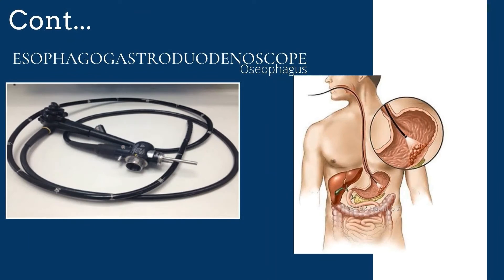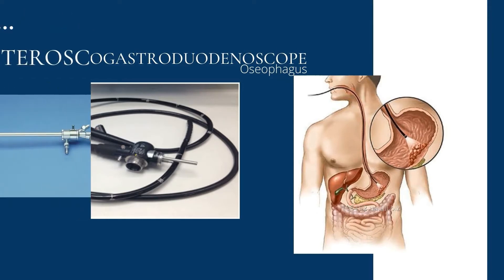The esophagogastroduodenoscope — the procedure is known as esophagogastroduodenoscopy, commonly called EGD, upper endoscopy, panendoscopy, or gastroscopy. It is specially designed for the area of the esophagus, commonly known as the swallowing tube, the stomach, and the duodenum, which is the first part of the small intestine. It is inserted through the mouth.